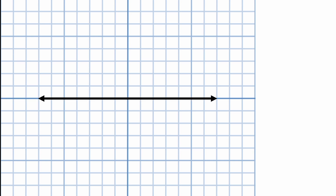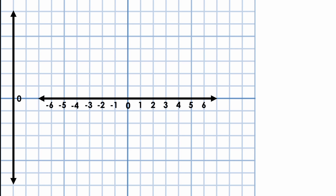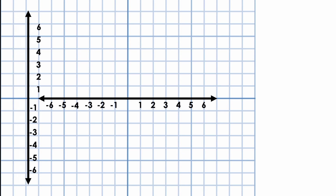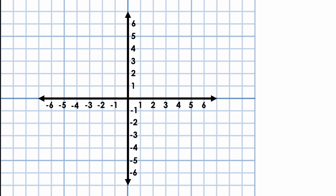The coordinate plane is created using two number lines: one horizontal number line and one vertical number line. The horizontal number line starts at zero and includes positive numbers to the right and negative numbers to the left. The vertical number line also starts at zero and includes positive numbers going up and negative numbers going down. Combining these two lines so they intersect at their zero points and are perpendicular to each other creates a two-dimensional coordinate plane.